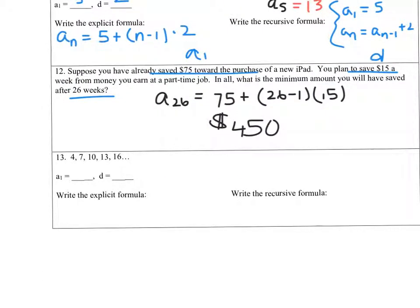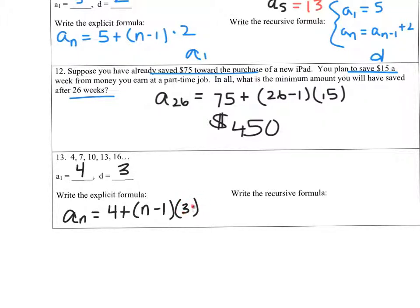Last problem: For the given sequence, a sub 1 is 4 and d is 3. The explicit formula is a sub n equals 4 plus (n minus 1) times 3. The recursive formula has two lines: a sub 1 equals 4, and a sub n equals a sub (n minus 1) plus 3.